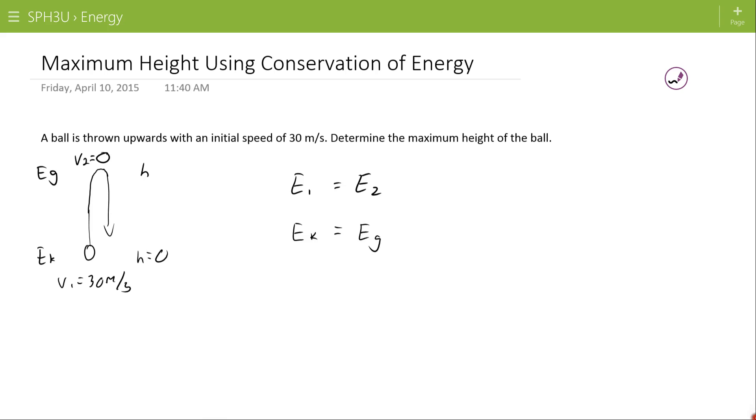Ek then uses our kinetic energy formula, one half mv squared, and Eg uses our gravitational potential energy formula, mgh. The mass on either side can cancel out. Mass cannot equal zero, so we can divide by it. Since it can't be, that's pretty easy.